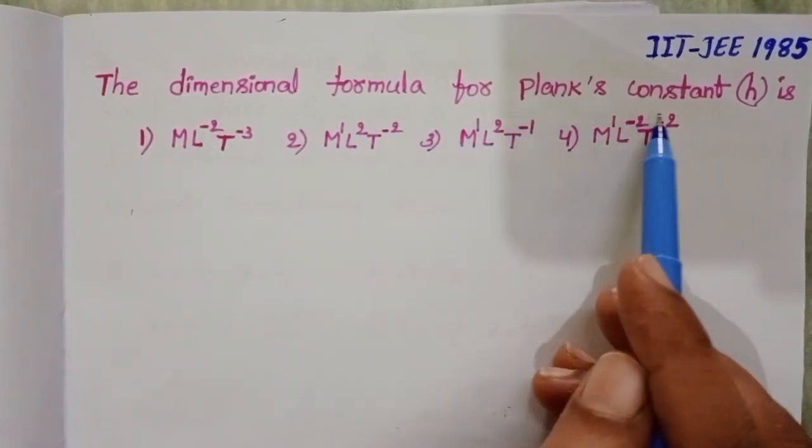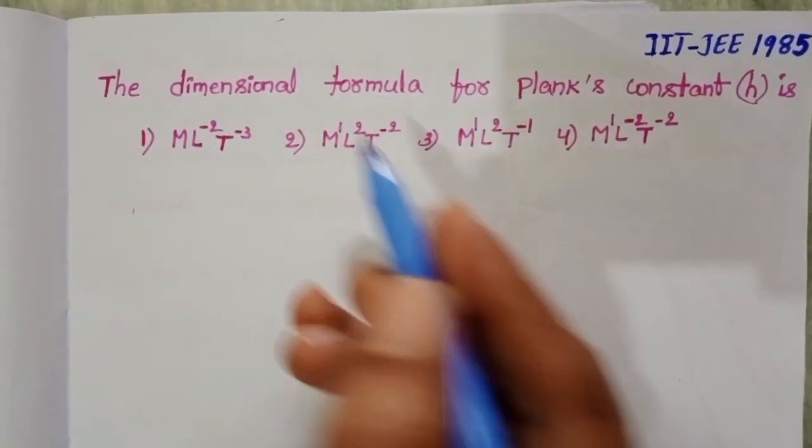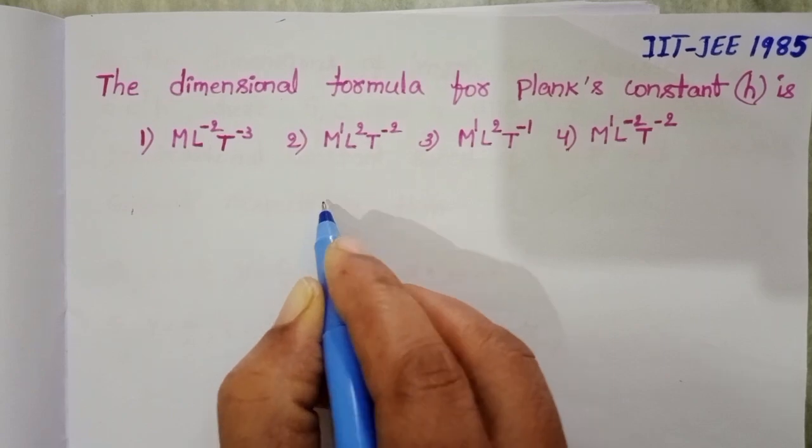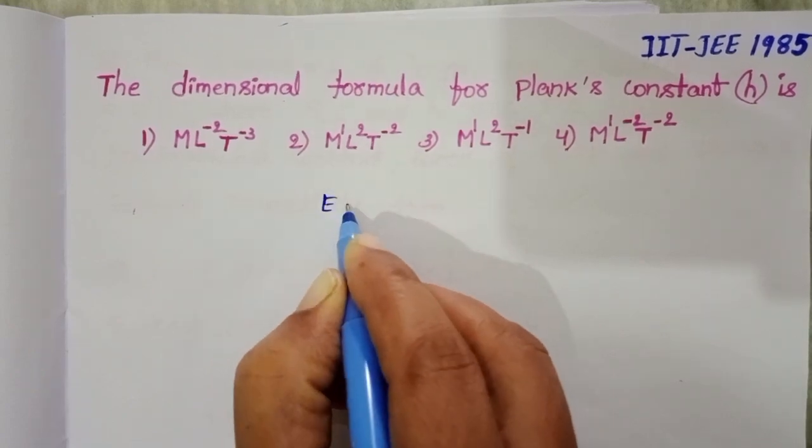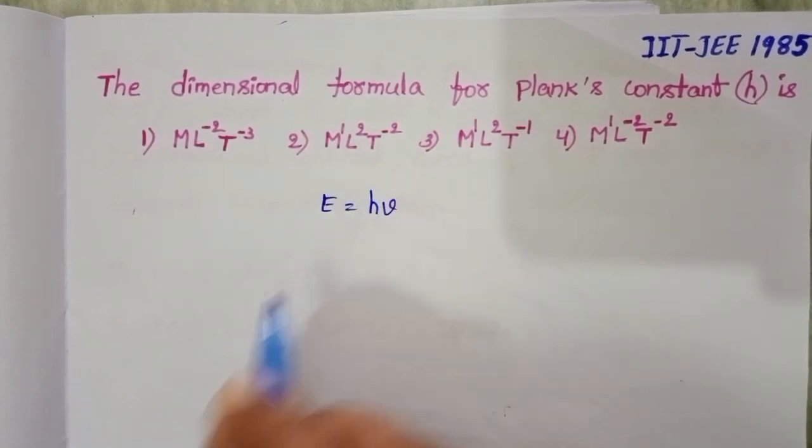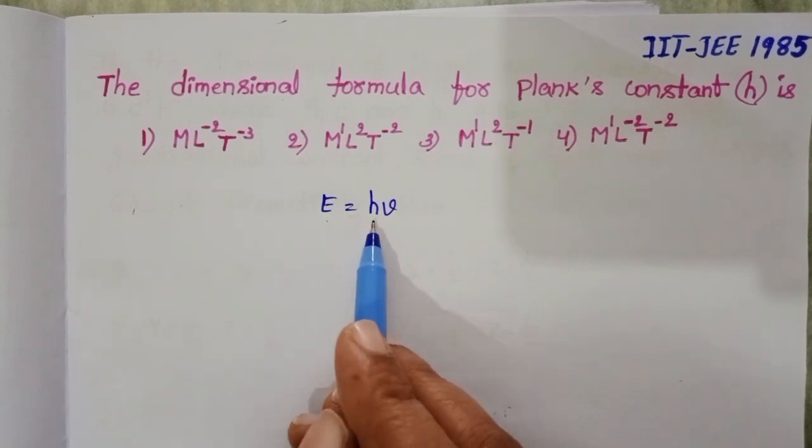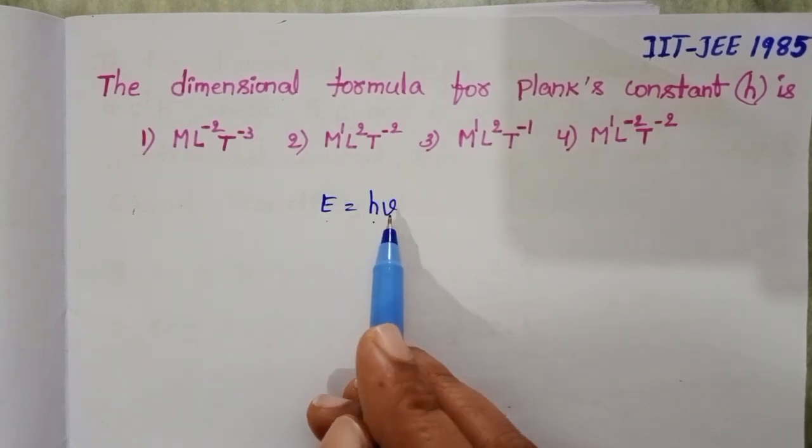The dimensional formula for Planck's constant. The relation between energy and frequency is E equals hν, where E is energy, h is Planck's constant, and ν is the frequency.